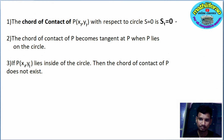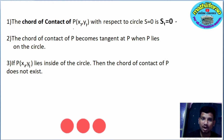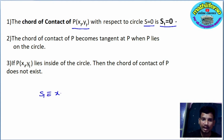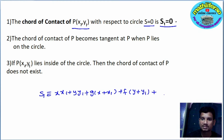Now, formulas. First one: chord of contact formula. The chord of contact of P(x₁, y₁) with respect to S = 0 is S₁ = 0. The formula is: xx₁ + yy₁ + g(x + x₁) + f(y + y₁) + c = 0. This is the chord of contact formula in S₁ notation.